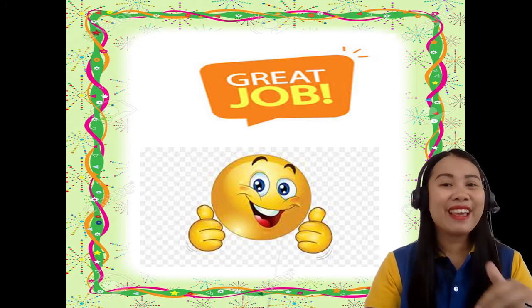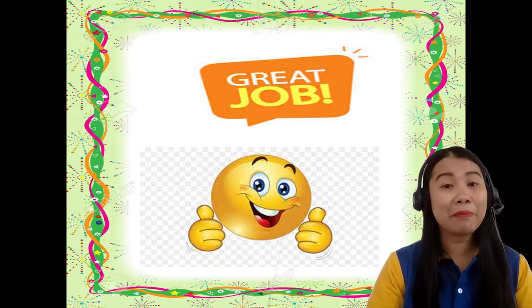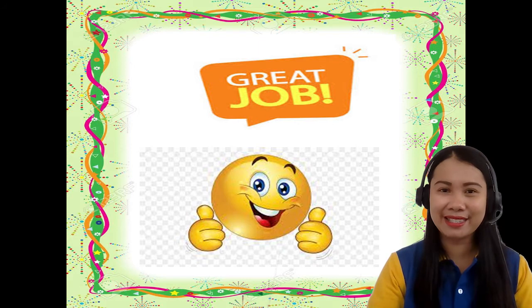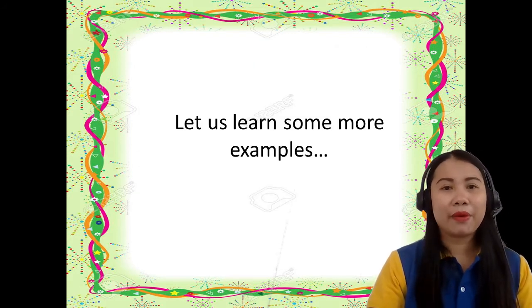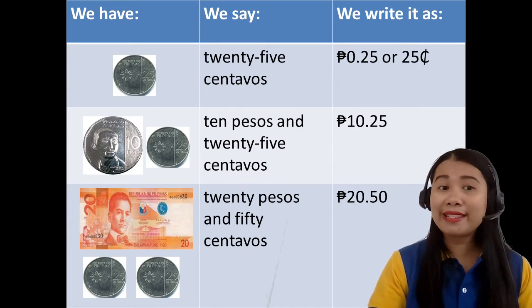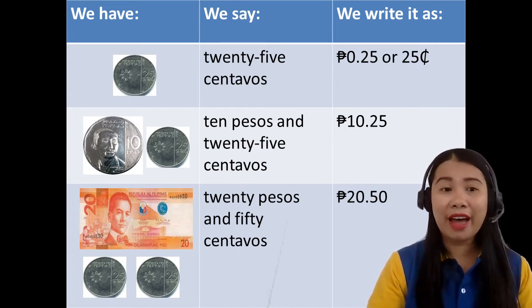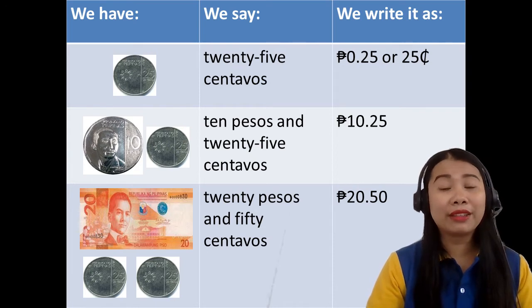Great job! Now you have already learned and identified the Philippine bills and coins. Let us learn some more examples. We have one 25-centavo coin. We say 25 centavos. We write it as: peso sign, zero decimal point two five, or 25 and the centavo sign.